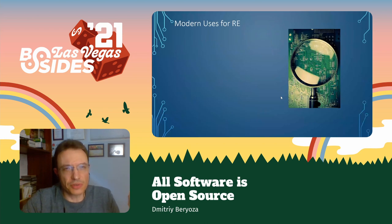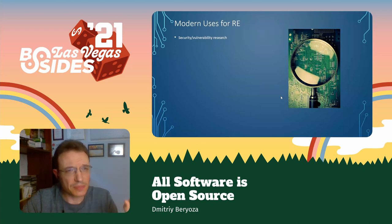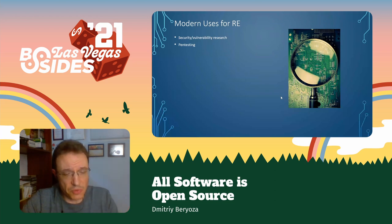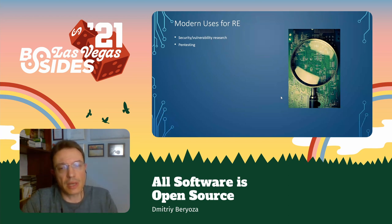There are a lot of modern uses for reverse engineering. The first one that comes to mind is security and vulnerability research. A lot of researchers are looking at all kinds of software and hardware and trying to discover vulnerabilities. In my penetration testing job, very often the customer we were testing for wasn't willing to share the design of the product, so we had to actually open it up and see how it works and discover bugs that way.